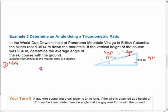So you should either from memory or looking at that data sheet which ratio does that involve? It involves sine, right? So I would put down sine of the angle which is theta is 984 over 3514.